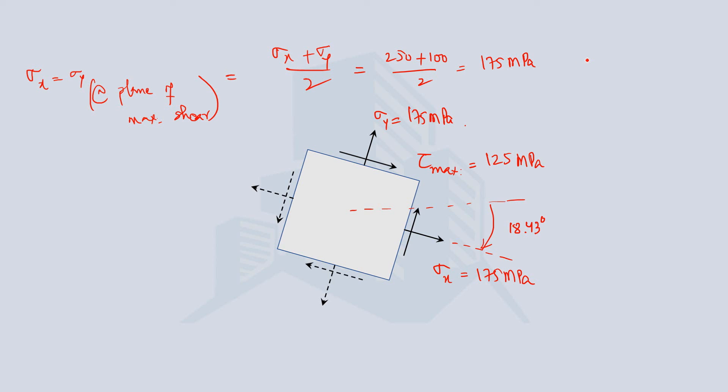This is how an example of transformation of plane stresses is solved, where we can determine the normal and shear stress on a rotated plane, the major and minor principal stresses, the maximum shear stress, the normal stresses at maximum shear, and the directions of all these planes. I believe you now understand how to tackle these kinds of problems. This is all from this video — thank you for watching.